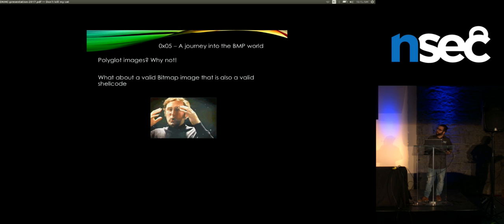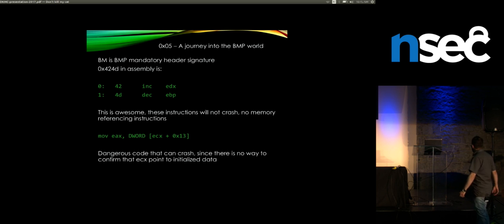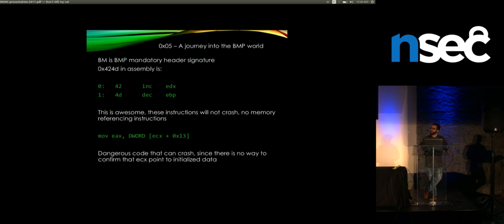What about trying to use those controlled bytes as a malicious payload? From an assembly perspective, if you convert the BMP magic bytes to x86 CPU instructions, they become increment EDX and decrement EBP. From a shellcode perspective, you're not addressing any memory location or dereferencing memory, so if you execute these bytes as shellcode, everything will work fine and your shellcode won't crash.